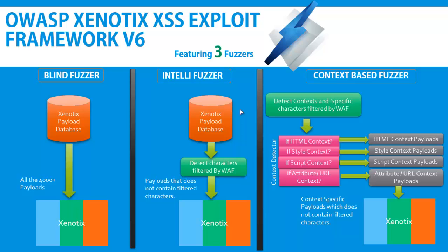Everyone knows that Xenotix's strength is based on its payloads. Xenotix has a payload database of about 2000 to 3000 payloads which can be mutated to form about 4000 plus payloads. The approach previously used by Xenotix was just Blind Fusor. The problem with Blind Fusor is that it is very time-consuming and may not give you the expected result, as it may even slow down the website.